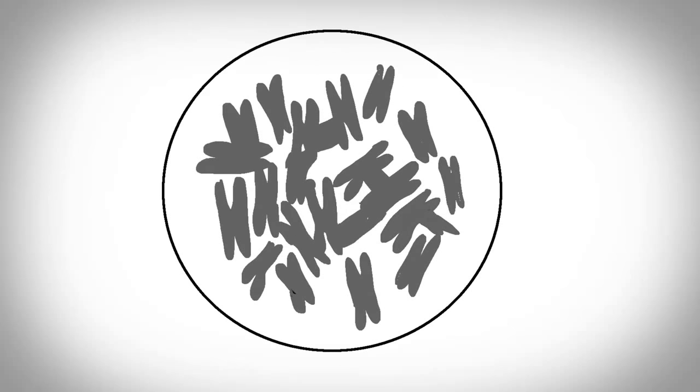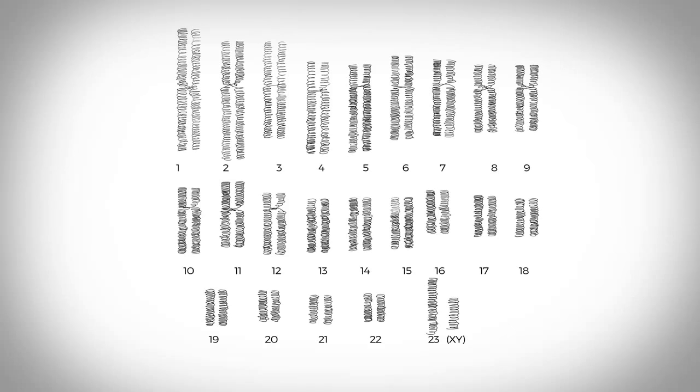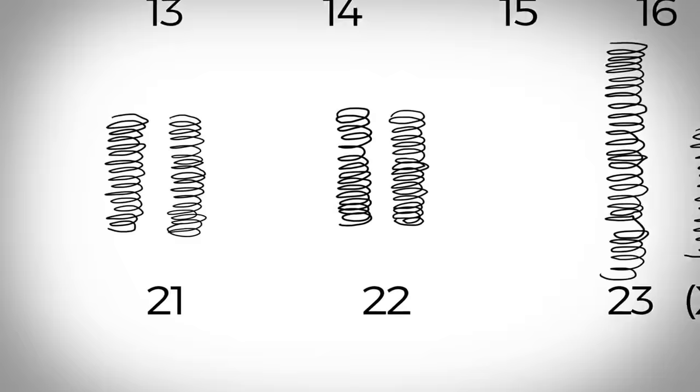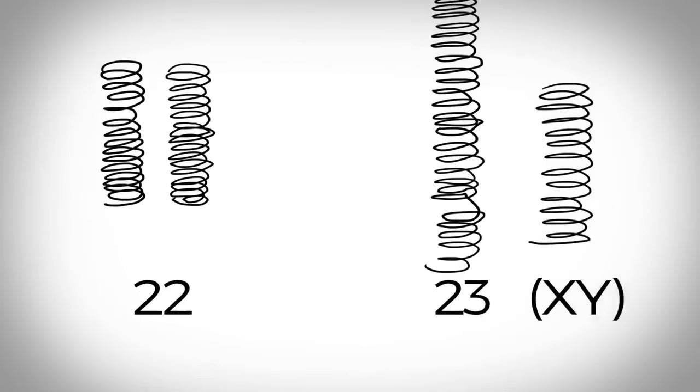In humans, each cell normally contains 23 pairs of chromosomes, for a total of 46. 22 of these pairs, called autosomes, look the same in both males and females.